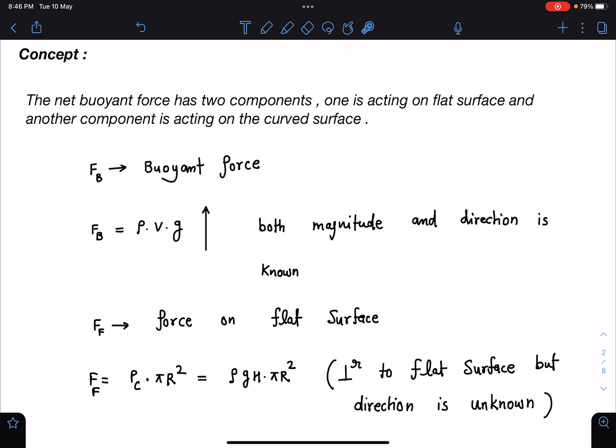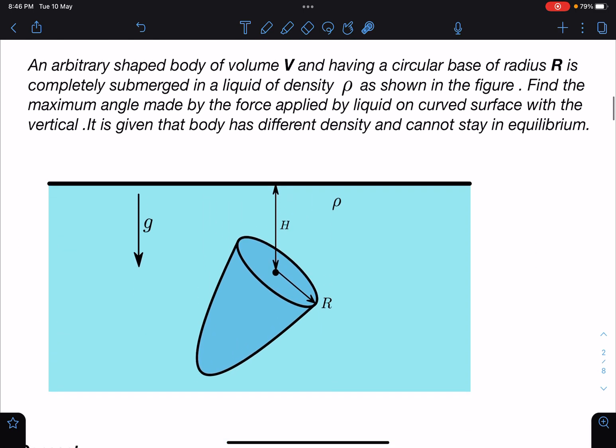Now we know that this force is going to be perpendicular to the flat surface and its direction is unknown to you. The direction is unknown because we haven't given the orientation of this object. It can be in this orientation, it can be in this orientation, or it can be a cone, it can be a hemisphere, it can be any random object like this.